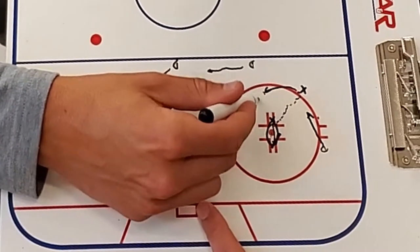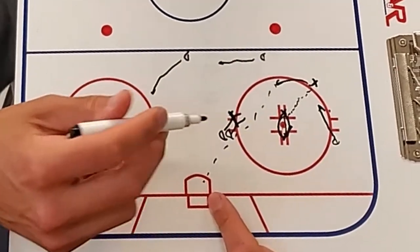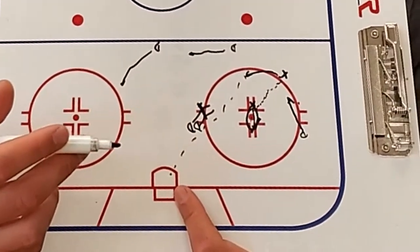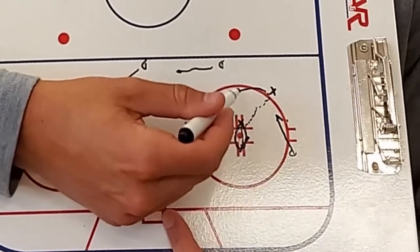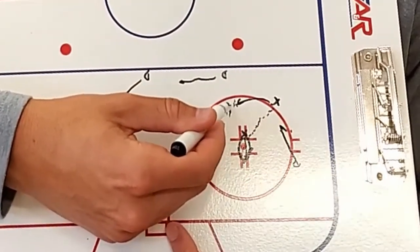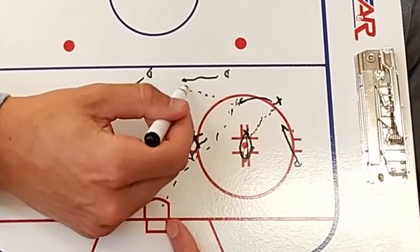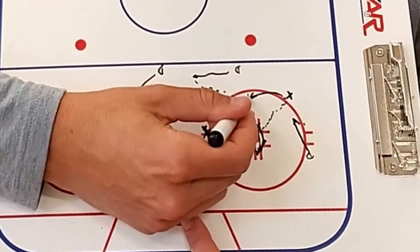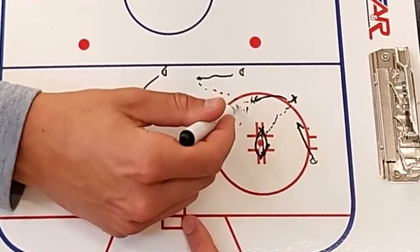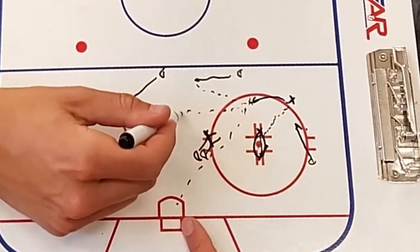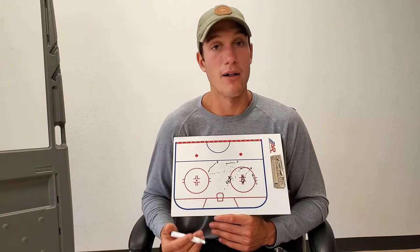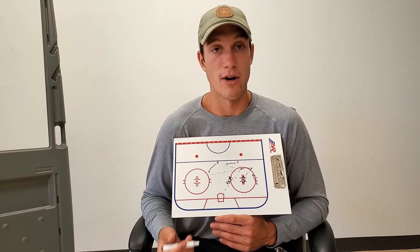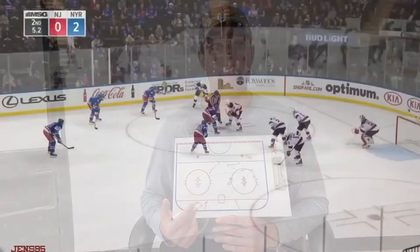From here, the forward with the puck has multiple options: you could take a shot yourself, which Ovechkin does a lot and he scores a lot of goals like that; you could fake a shot and pass to this defenseman; or you could fake a shot and pass to the far defenseman. There are three options that you have and all of them can generate a great scoring chance.